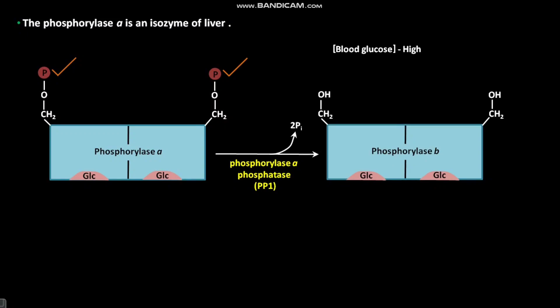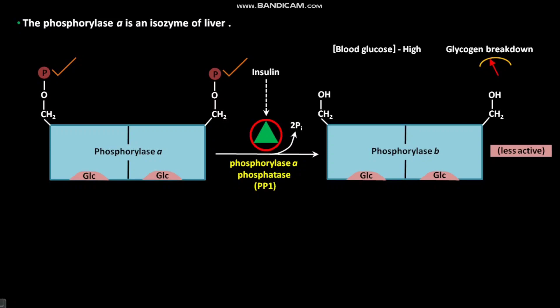Phosphorylase B is less active than active Phosphorylase A. In the presence of less active Phosphorylase B, glycogen breakdown slows. Insulin also acts indirectly to stimulate PP1, and as a result, glycogen breakdown slows.